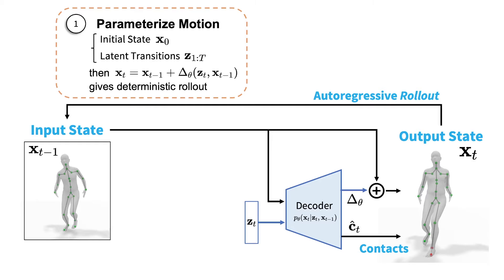Taken together, Humor's decoder is used to perform a deterministic rollout and recover the motion that they represent. Not only is this a compact representation of the optimization variables, it also inherently encourages realistic motion and estimates ground contacts for free.